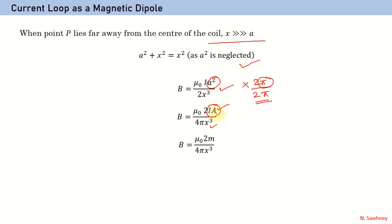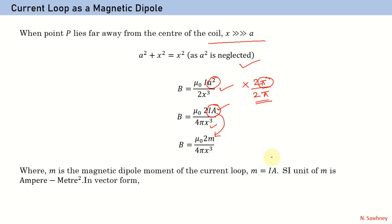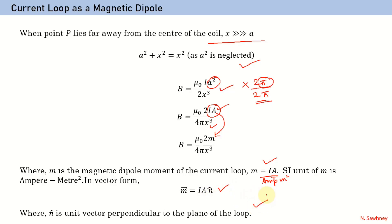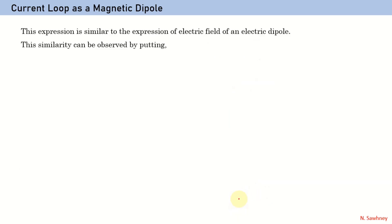Now, IA is replaced by the magnetic dipole moment, small m, of the current loop. The SI unit of magnetic dipole moment is ampere·meter², which we can derive from the formula: current I is in amperes and area is in meter². In vector notation, this magnetic dipole moment can be written as m = IA·n̂, where n̂ is the unit vector perpendicular to the plane of the loop.